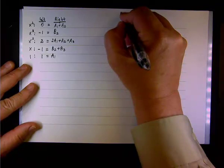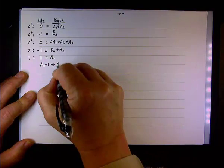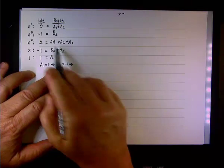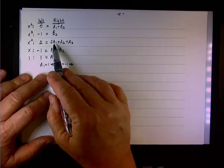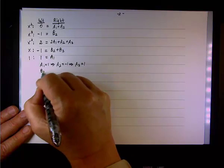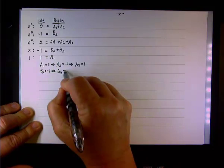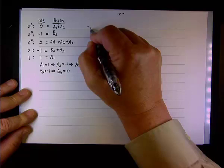This gives us our 5×5 system and we can solve it immediately. a1 = 1. Then a1 + a2 = 0 gives a2 = −1. Then 2(1) + (−1) + a3 = 2 gives 1 + a3 = 2, so a3 = 1. We already found b2 = −1. And b2 + b3 = −1 gives −1 + b3 = −1, so b3 = 0. We have a complete solution.